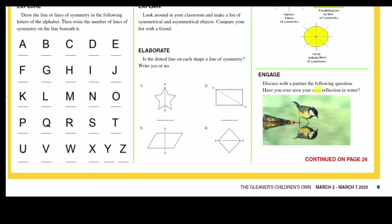Engage — discuss with a partner: have you ever seen your own reflection in water? Here we have a bird and its reflection. There's a story that goes with this idea of reflection — the story of the greedy dog. A dog was going home with a bone in his mouth; he saw another dog looking at him with an even bigger bone. He tried to attack the dog and lost his own bone, because he had seen his own reflection in the water. Because of his greed, he lost what he had.